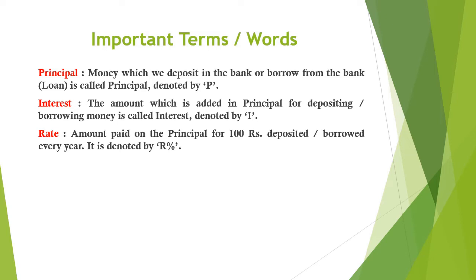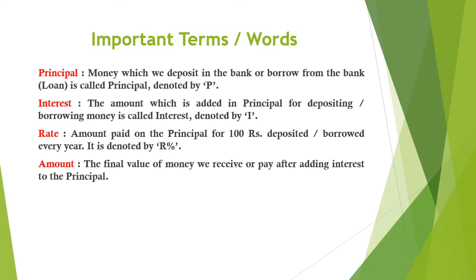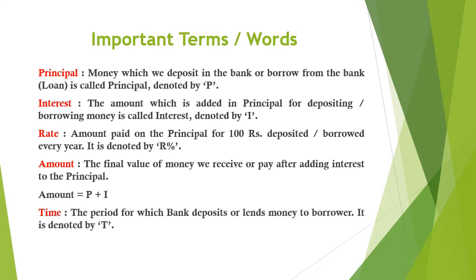Rate: the amount paid on the principal for every 100 rupees — whether on deposit or on borrowing — every year is called Rate of Interest, denoted by R. Since it is charged per 100 rupees, we denote it as a percentage because 100 means percentage. Amount: the final value of money we receive or pay after adding interest to the principal — what we pay the bank for borrowing or what the bank pays us for deposits — is called Amount.